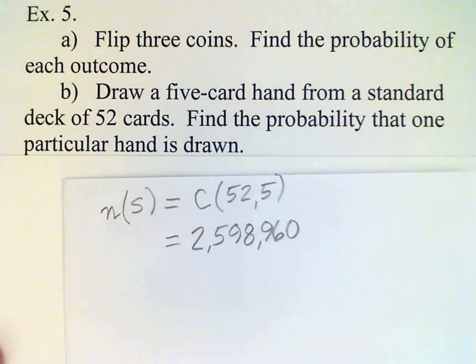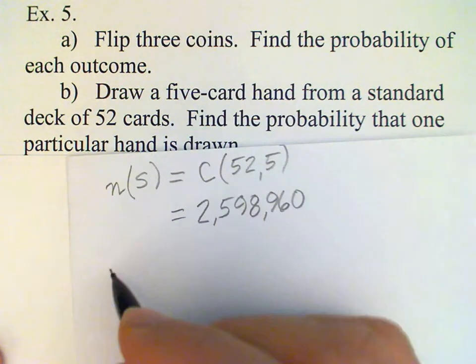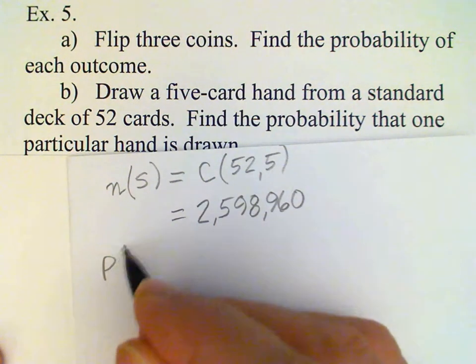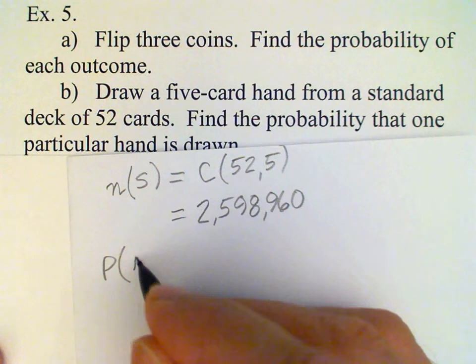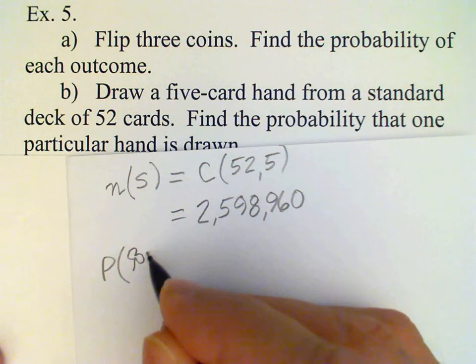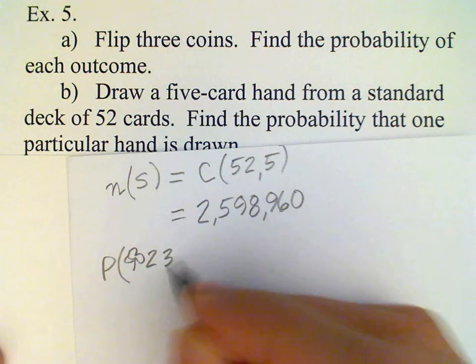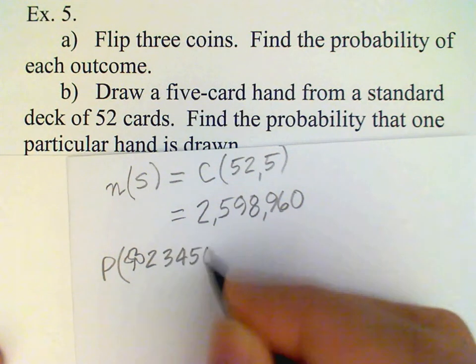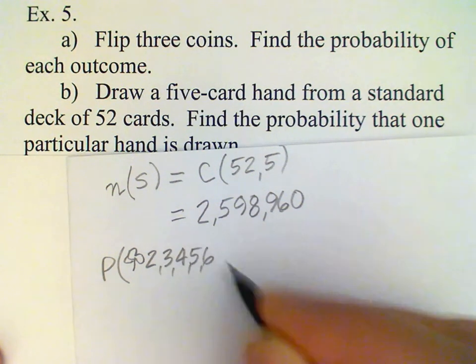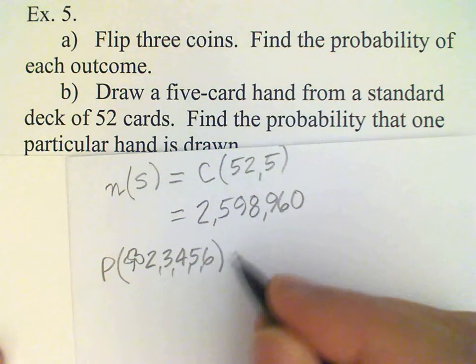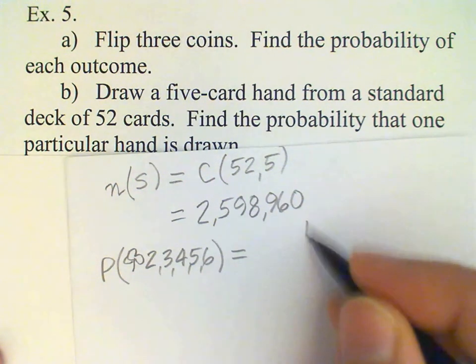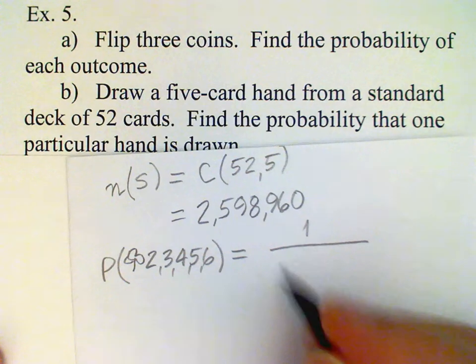Okay, and since we're assuming that each of these hands is equally likely, then the probability of any one of those hands, again, suppose that's the two, three, four, five, six of clubs, just for definite. And this is one over that number.